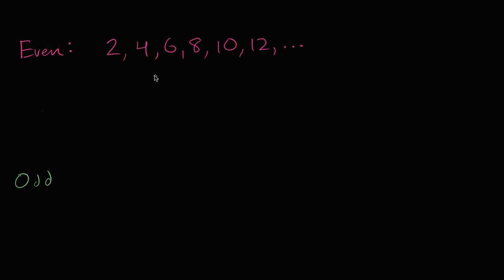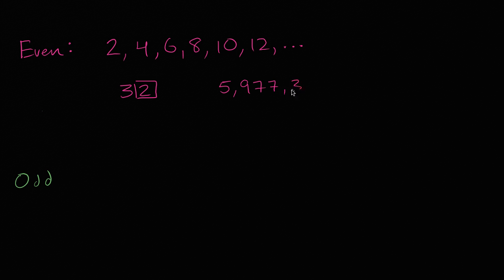An easy way to spot an even number is that its one's place is going to be even. So for example, the number 32 is an even number because in the one's place you have a two. The number 5,977,354 — well, that's an even number because the one's place is even.